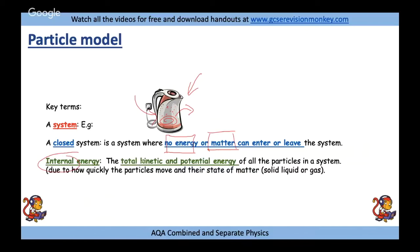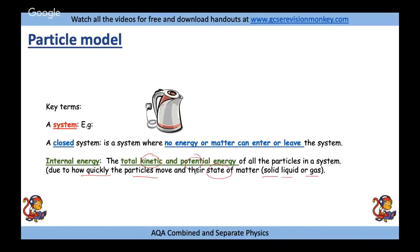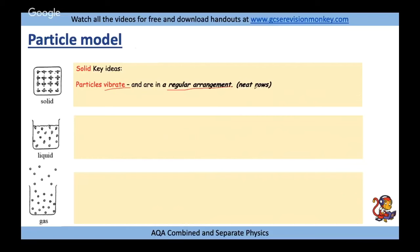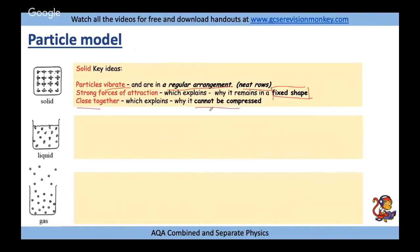Internal energy is the total kinetic energy and potential energy of all the particles in the system. It's due to how quickly the particles move (their kinetic energy) and their state of matter. Gas particles have more potential energy; solid particles have less. For solids: particles vibrate in a regular arrangement with strong forces of attraction, giving a fixed shape, and they're so close together they cannot be compressed.